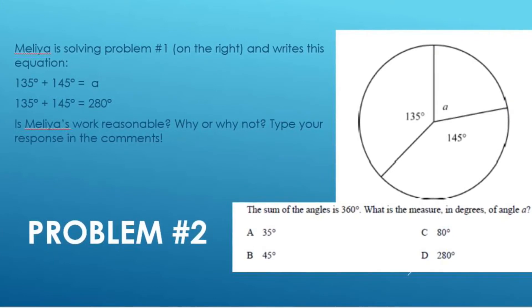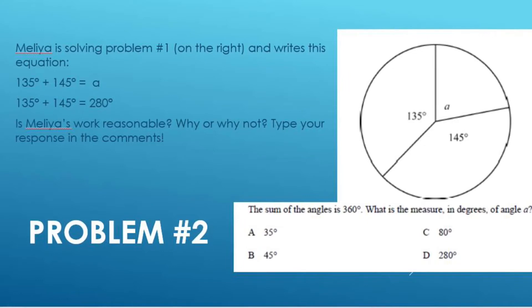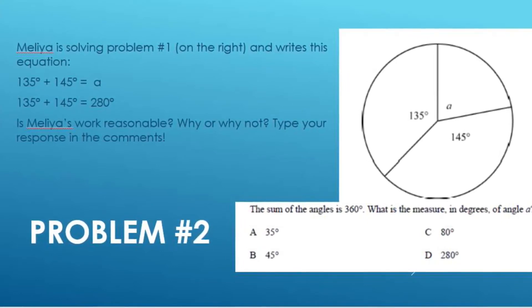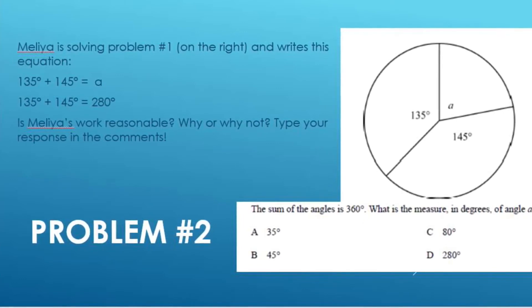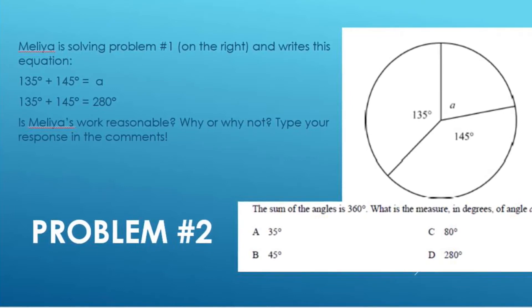Before we take a look at the answer to problem one, let's take a look at problem number two. Malia is solving problem number one on the right and writes this equation: 135 plus 145 equals A. 135 plus 145 equals 280 degrees.